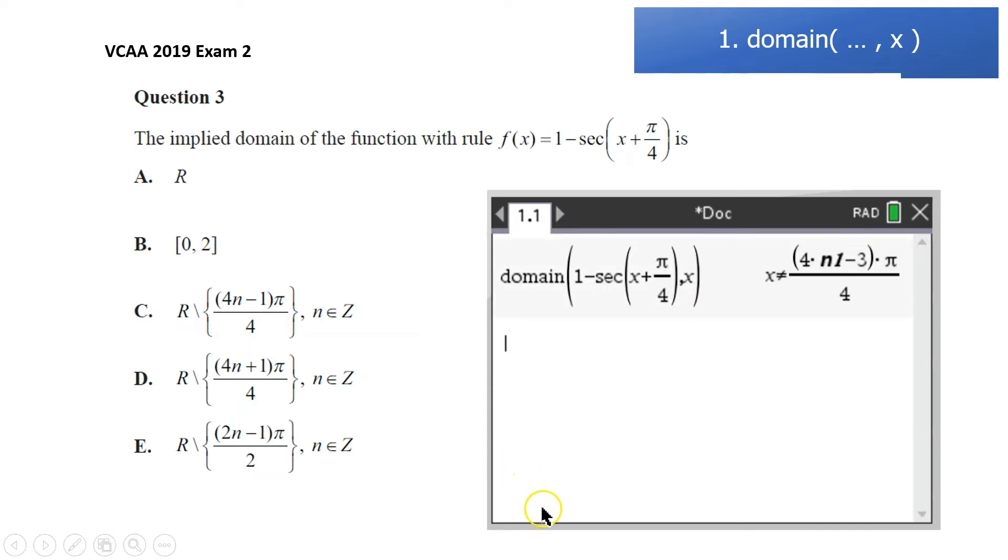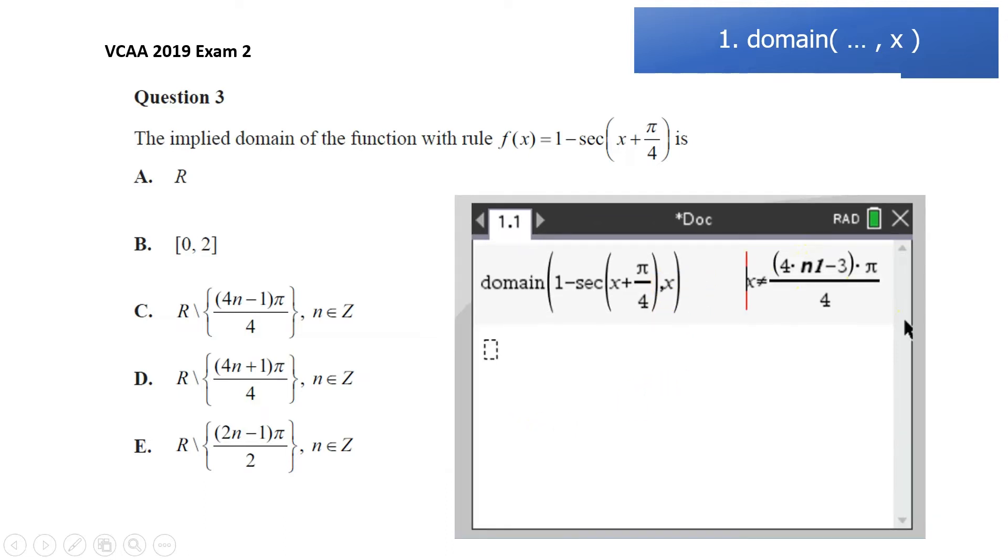So it gives us the domain here. In this case, we've got this as 4n minus 3 times π over 4. We have to compare it to these options, and they don't look exactly the same. But if we sub a value, for example when n equals 0, this first one would give us negative π on 4.